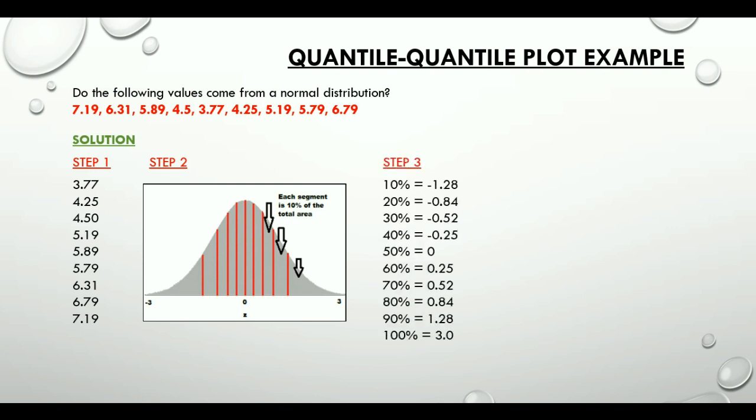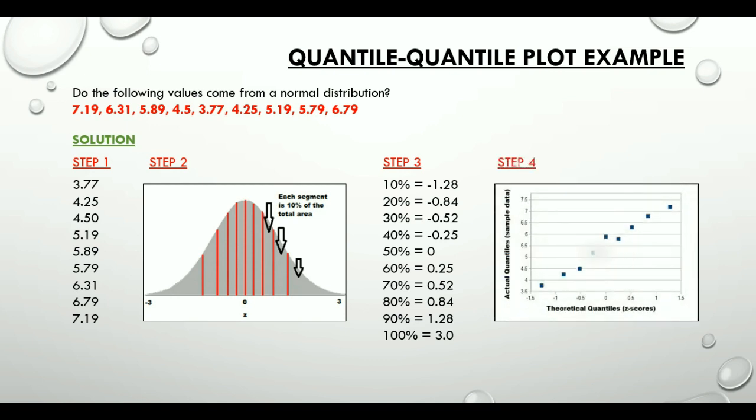Finally, step four: we will plot the data set values against the Z values. Did you notice that this Q-Q plot has an almost straight line shooting right through the data points? This indicates that the data is approximately normal. Having said that, I hope that you enjoyed this video and would appreciate the usage of a Q-Q plot or a quantile-to-quantile plot.